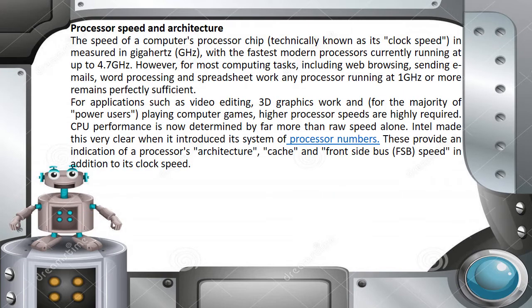The speed of a computer's processor chip, technically known as its clock speed, is measured in gigahertz, with the fastest modern processors currently running at up to 4.7 GHz. For most computing tasks including web browsing, sending emails, word processing, and spreadsheet work, any processor running at 1 GHz or more remains perfectly sufficient. For applications such as video editing, 3D graphics work, and playing computer games, higher processor speeds are required.